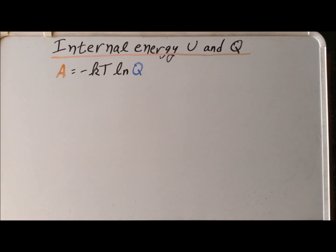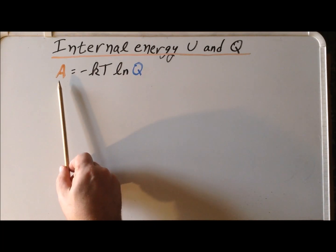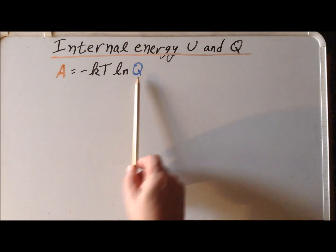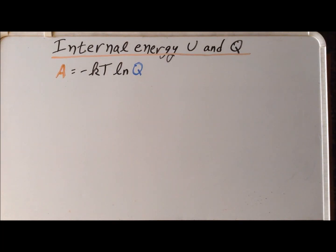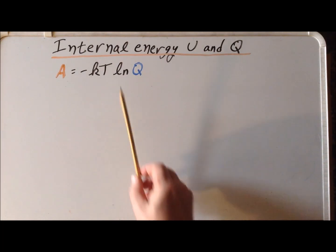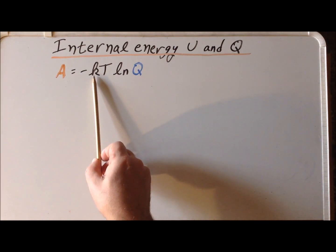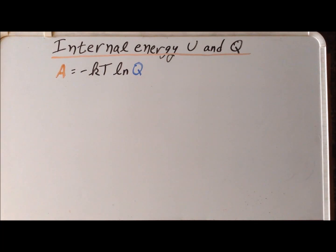We begin with an important relationship between the Helmholtz energy A and the canonical ensemble partition function Q. In this relationship, K is the Boltzmann constant and T is the thermodynamic temperature.